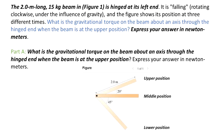The 2 meters long, 15 kg beam in figure 1 is hinged at its left end. It is falling, rotating clockwise under the influence of gravity. The figure shows its position at 3 different times. We are going to analyze the effect of the gravitational torque for the upper position, middle position, and lower position shown in this figure.